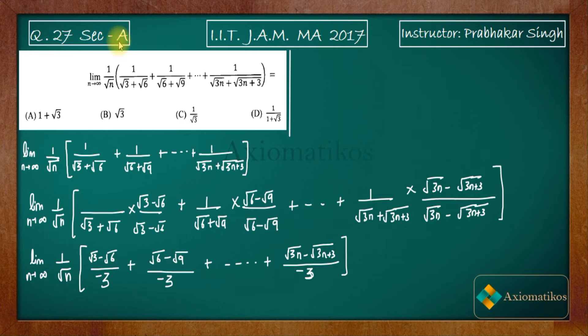This is why I was doing rationalization, because after rationalization the denominator for every term will be the same. Why? Because in the nth term also, if you subtract 3n from 3n plus 3, you will get 3. Are you getting my point? So this is what we have done so far.